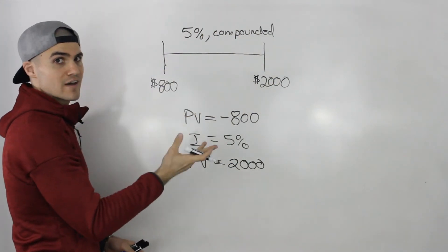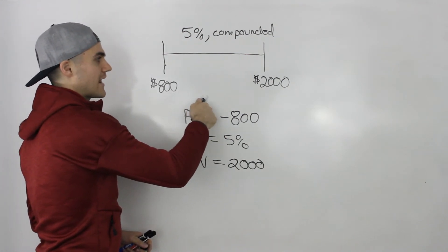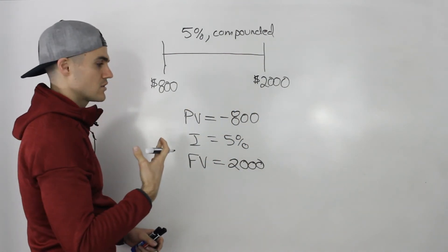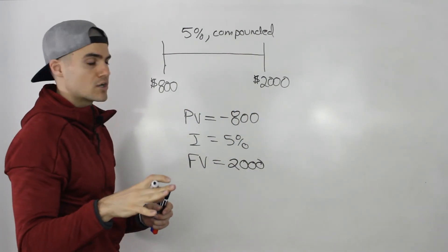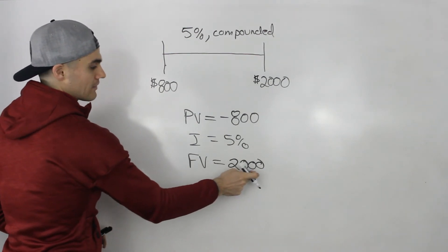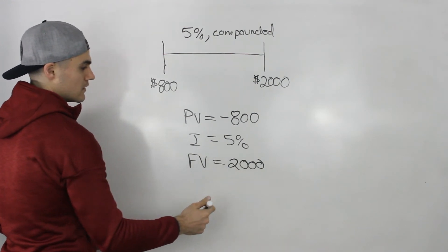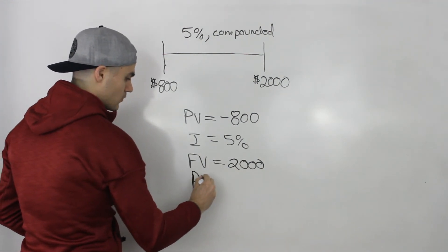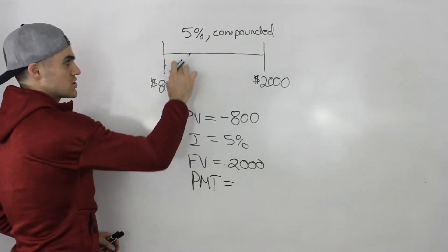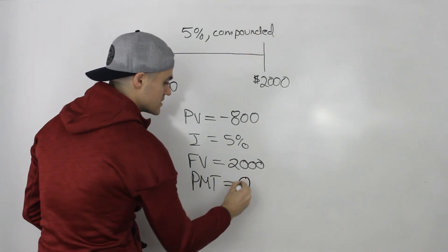This timeline just represents the investment. Initially we're investing the $800 — that's a negative cash flow — and then that $800 is going to grow to $2,000 and we'll receive that $2,000. What we do with that $2,000 after is irrelevant, so that is a positive cash flow. There's no other cash flows happening in between, so PMT is zero.